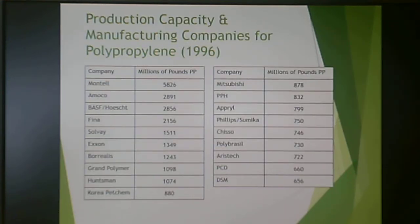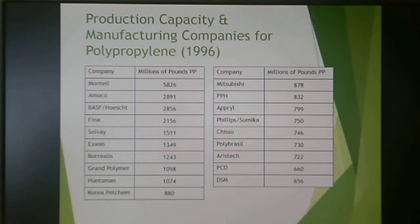Polypropylene is made by a wide variety of companies. The ones that control the catalysis technology tend to be the ones that make the most polypropylene — companies like Montell, BASF, and Amoco, which have the market cornered on catalysis.